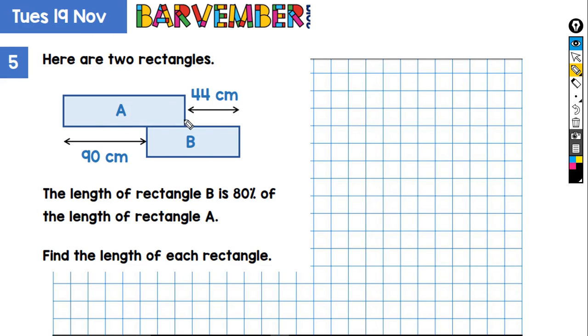This is the bit that I'm going to focus in on at the beginning where it says the length of rectangle B is 80% of the length of rectangle A. Now 80% I will think of—I'm going to think of as four-fifths. So I'm really going to think of B as four-fifths and A as five-fifths.